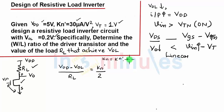Equal to KN dash by 2. We know that KN is equal to KN dash W by L, so we'll write KN dash because that value has been given to us. W by L, twice VGS. VGS in this case is nothing but Vin which is nothing but VDD, minus threshold voltage into Vout, nothing but VDS, minus Vout squared. And because we are finding VOL, this Vout is nothing but VOL.